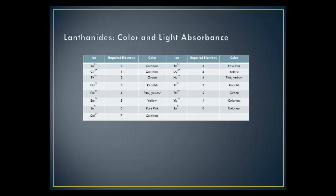The color that a substance appears is the color that is reflected by the substance. This means that if a substance appears green, the green light is being reflected. The wavelength of the light determines whether it will be reflected or absorbed. Similarly, the splitting of the orbitals can affect the wavelength that can be absorbed, which in turn is affected by the amount of unpaired electrons.